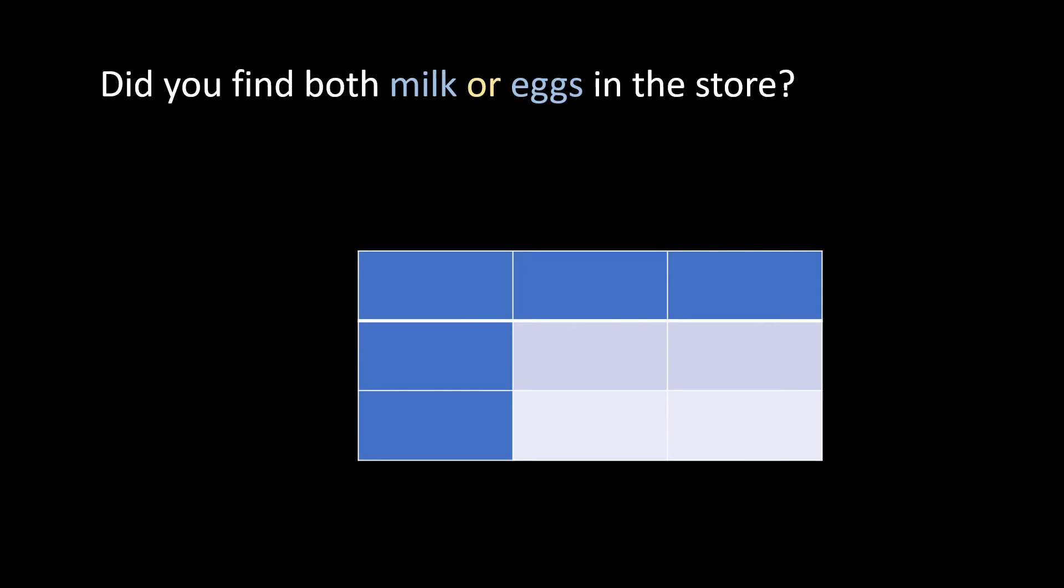Similar to AND, we are again drawing a chart, putting the question number one which is 'found eggs' on top and the second question 'found milk' in the rows. Now we know that the answer to found eggs can be yes or no, and found milk similarly can be yes or no. Now what will be the answer to the combined OR question if we fill up this table?